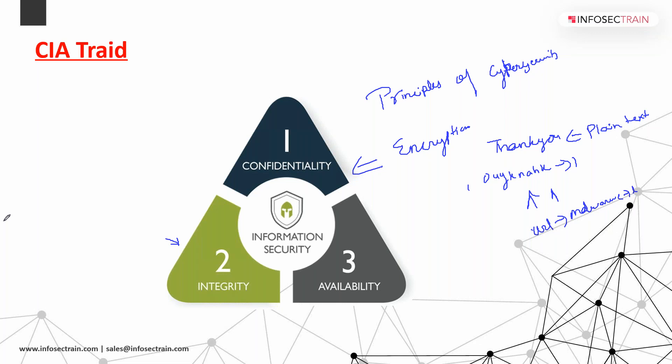With hashing, we change the data into a code. Once a hash is created, it never changes. The converted data gets the hash attached to it. This data is sent to another system, which first decrypts the data, then converts it to a hash, and matches both hash values.